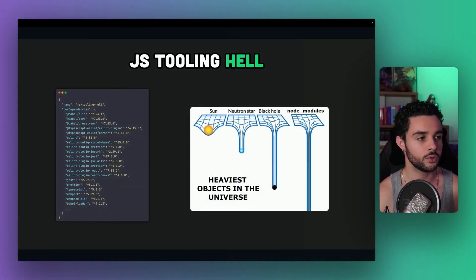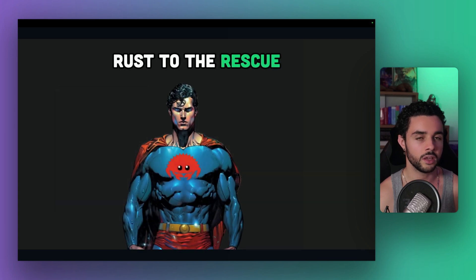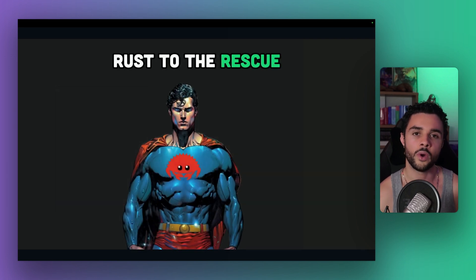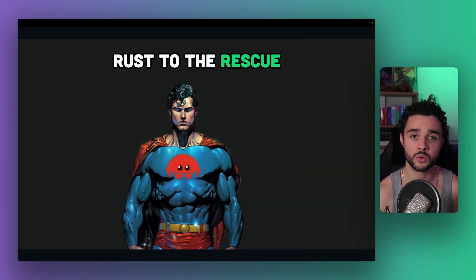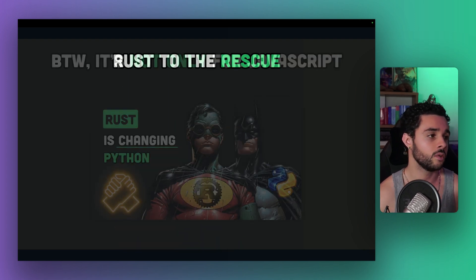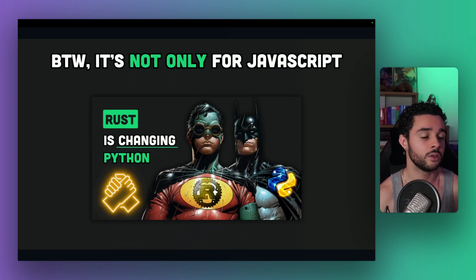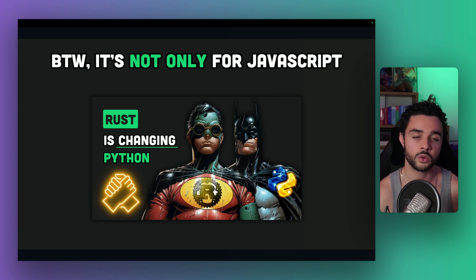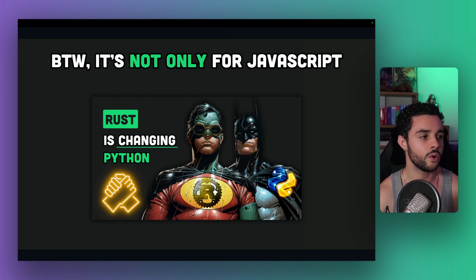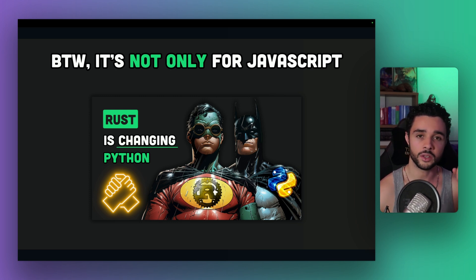And that's where Rust comes to your rescue. You might be thinking: isn't Rust just a systems programming language? What does it have to do with my JavaScript code? Well, developers have started leveraging Rust's speed and efficiency to create tools that are revolutionizing the JavaScript ecosystem. And by the way, it's not just for JavaScript — in a previous video, we saw how Rust is significantly improving Python tooling too.